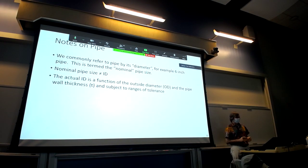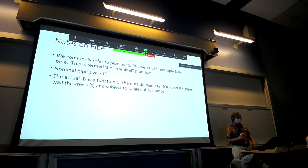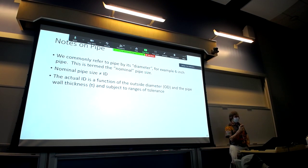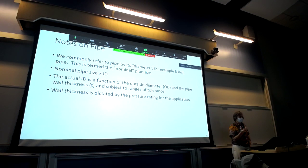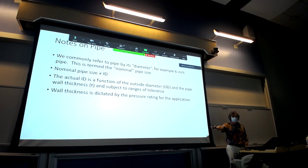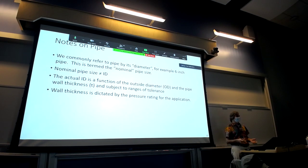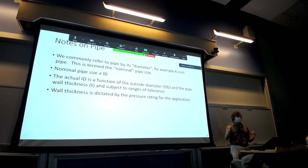The wall thickness is dictated by the pressure rating — the thicker the wall, the higher the pressure rating the pipe can withstand. If you take the outside diameter and subtract twice the wall thickness, that may or may not equal the inside diameter due to tolerances. In household systems, working pressure is typically 40 to 60 PSI — you don't need pipe rated at 500 PSI for your house.